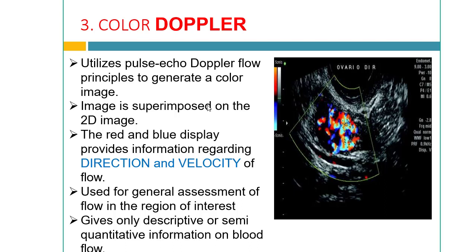The third and most commonly used mode is color Doppler. Color Doppler sonography utilizes the pulse-echo Doppler flow principle to generate colored images superimposed on the 2D image. The red and blue display provides information about the direction and velocity of flow. Color Doppler is used for general assessment of flow in a region of interest and gives descriptive and semi-quantitative information regarding blood flow.